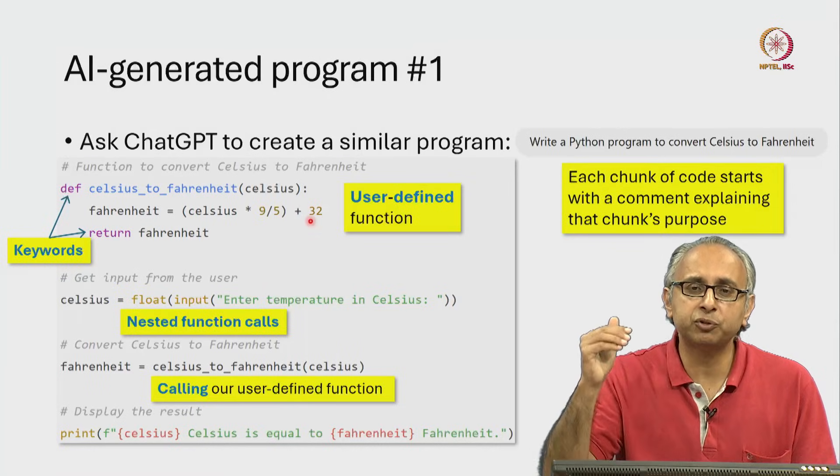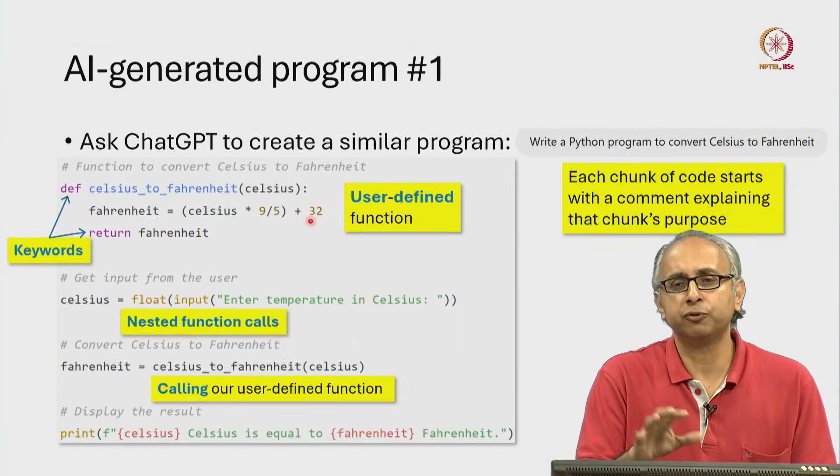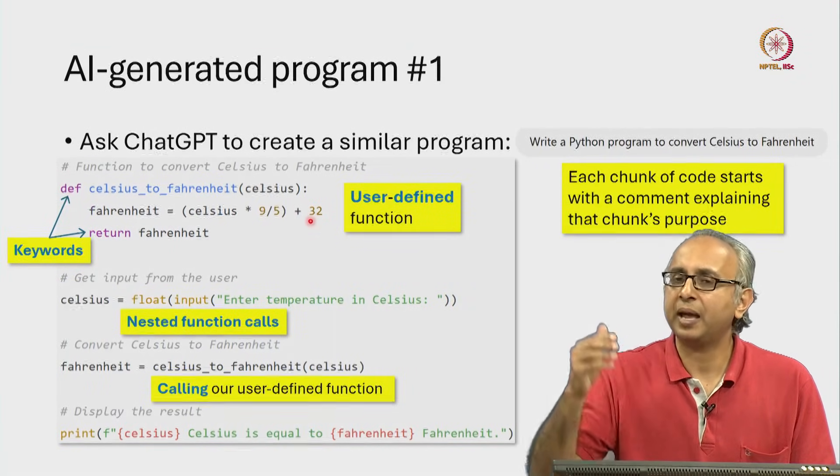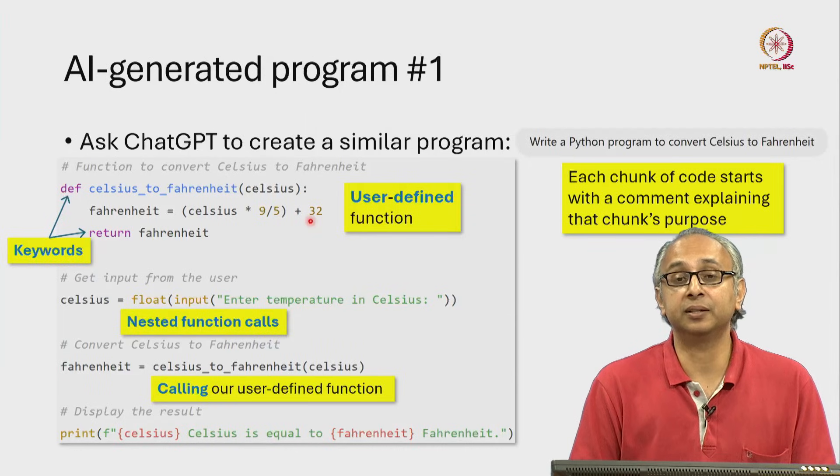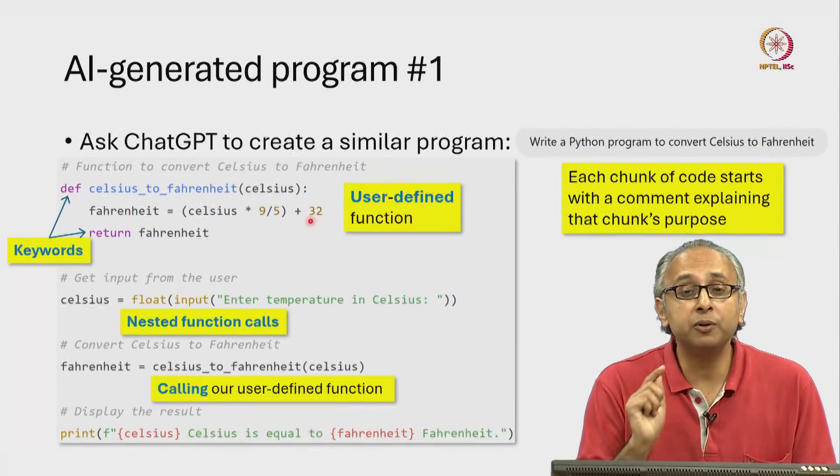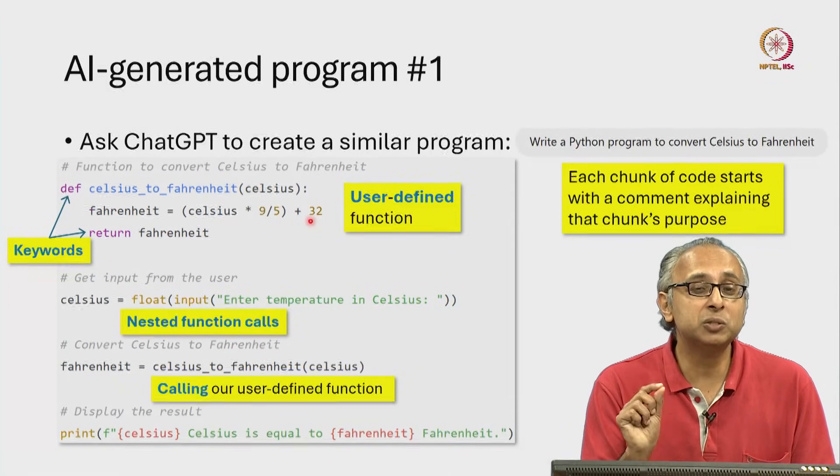Well, suppose we have to repeat this kind of calculation for different Celsius values at ten different places in the code. Suppose in one of those places, we made a small mistake.